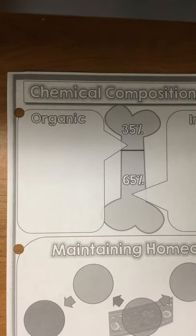And this is chemical composition. So we have organic and inorganic. Organic means the things that are not minerals, and inorganic is minerals.